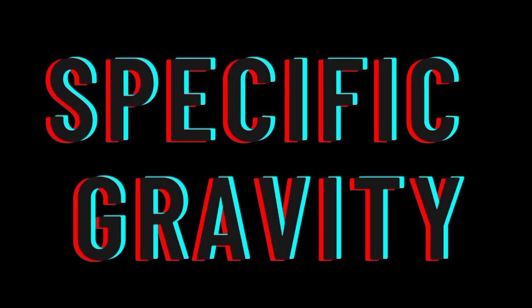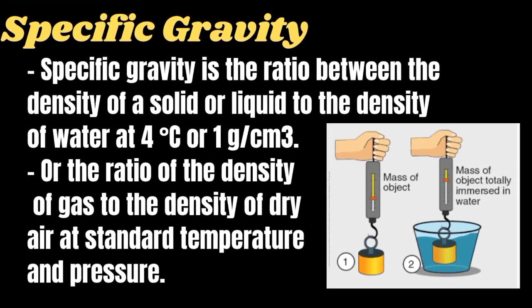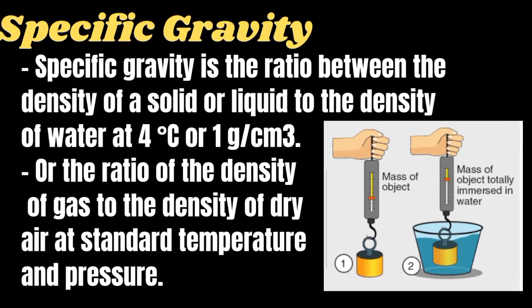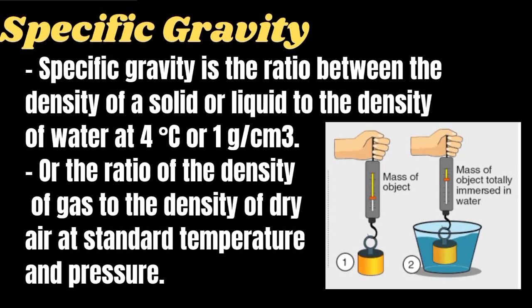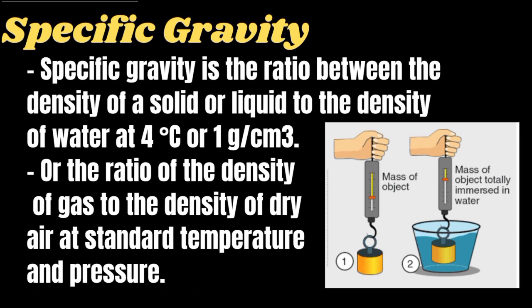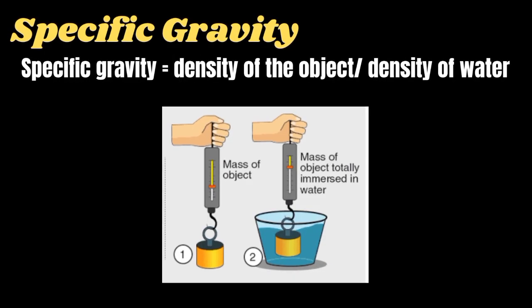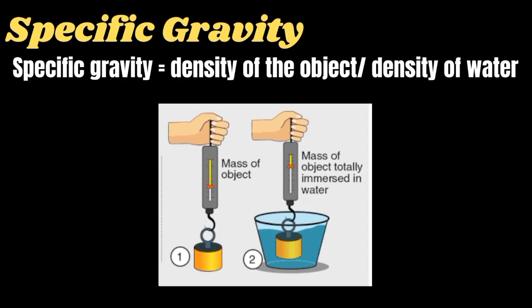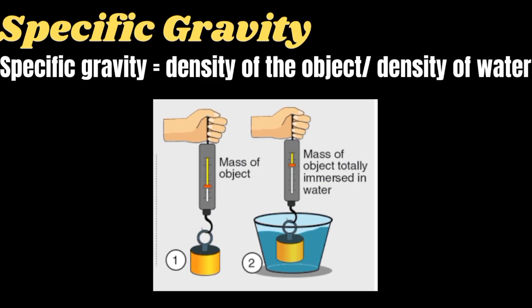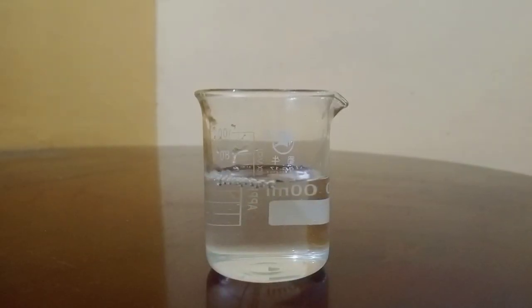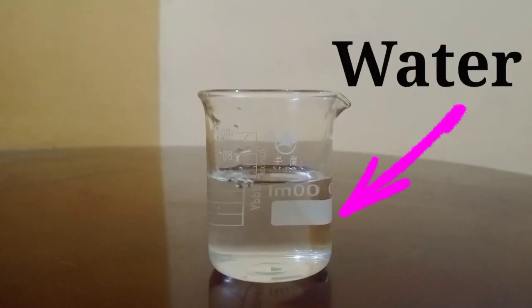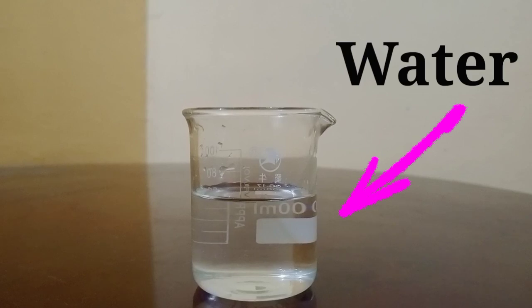Specific gravity is the ratio between the density of a solid or liquid to the density of water at 4 degrees Celsius, or 1 gram per cubic centimeter, or the ratio of the density of a gas to the density of dry air at standard temperature and pressure. Specific gravity is equal to the density of the object divided by the density of water. Specific gravity can tell us if the object will sink or float in our reference substance — usually water — at a density of 1 gram per cubic centimeter.